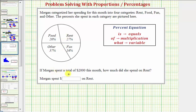If Morgan spent a total of $2,000 this month, how much did she spend on rent? We can see here she spent 27% on rent.